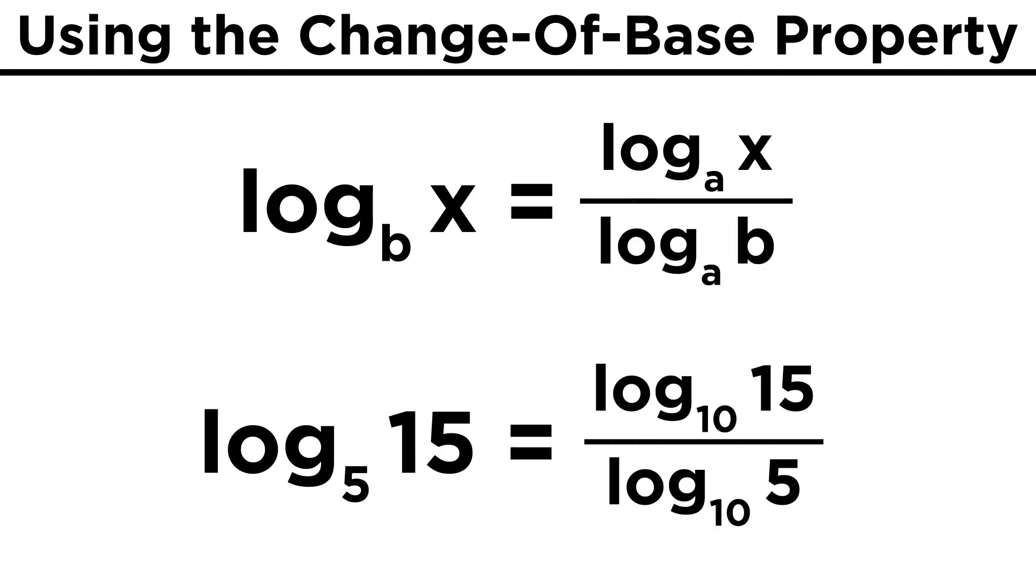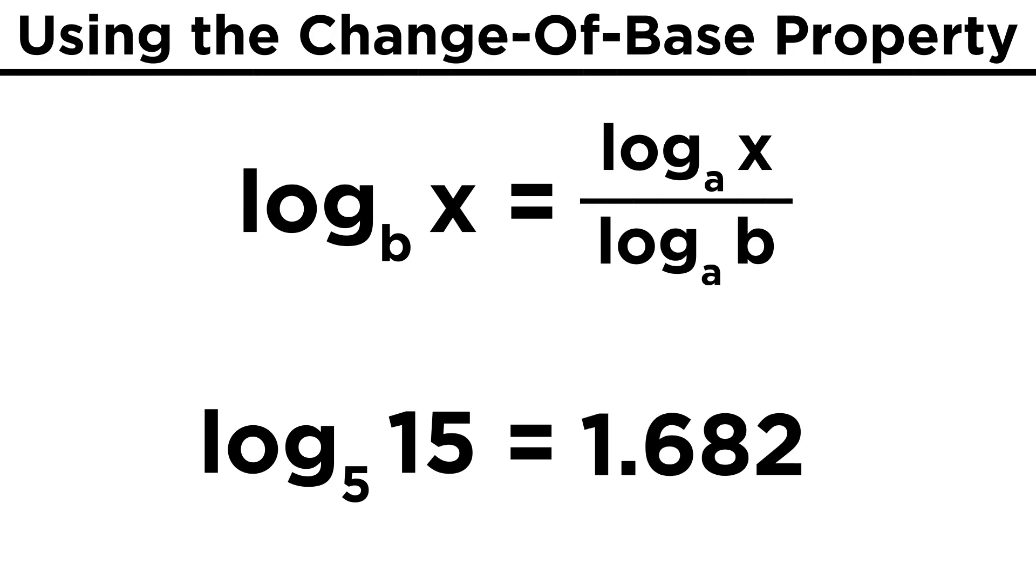Here is an example so we can get some context. Say we want to express log base 5 of 15 as having base 10 instead, so that we can evaluate this on the calculator. We would just do log base 10 of 15 over log base 10 of 5. This is roughly 1.176 over 0.699, or 1.682.